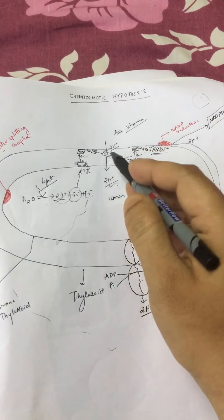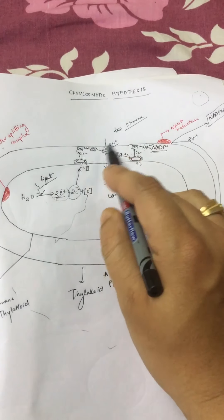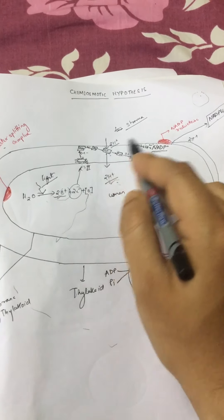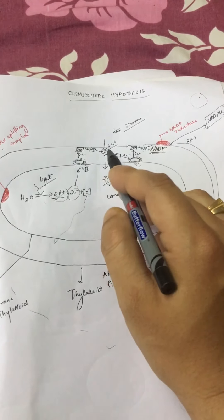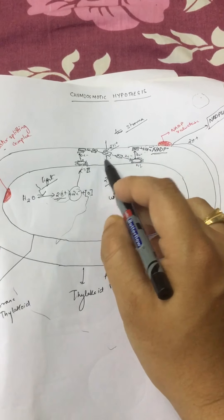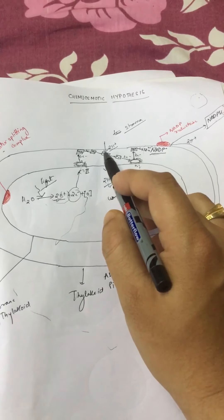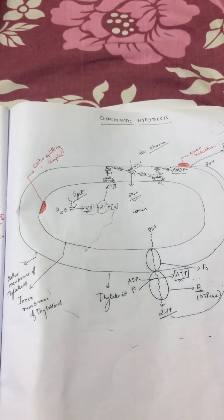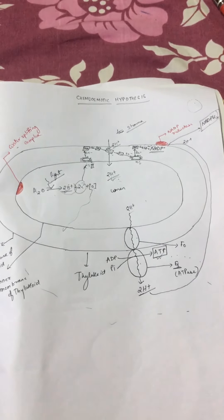This ATP and NADPH2 formed in the stroma will be used in the dark reaction. This completes the explanation of how ATP is generated at the cytochrome complex — this is the chemiosmotic hypothesis. Thank you.